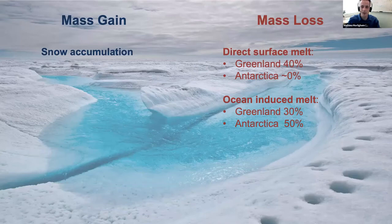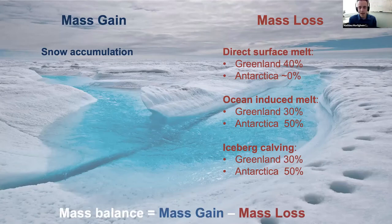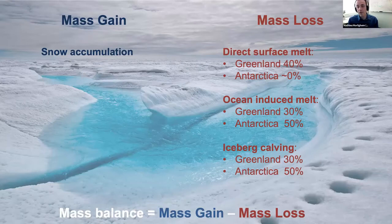The last process is iceberg calving — 50% in Antarctica and 30% in Greenland. These are processes that always happen; they're part of the natural system. What we don't want is for the mass loss to exceed the mass gain. What we're seeing today is clearly more surface melt in Greenland. In Antarctica, it's not so clear, but we have a lot more ocean-induced melt, calving, and grounding line retreating. The mass loss part of the system is really picking up.